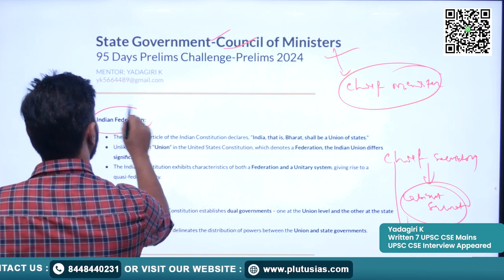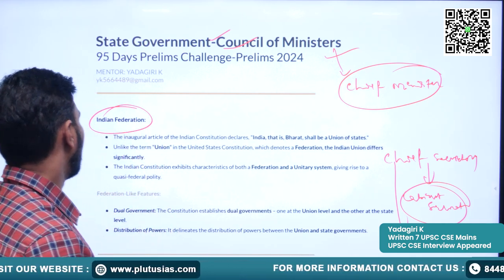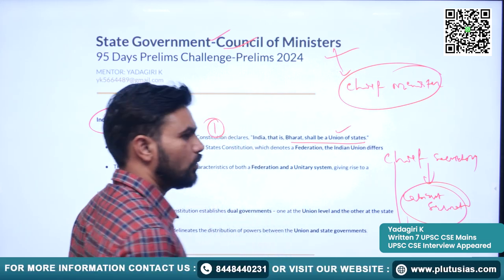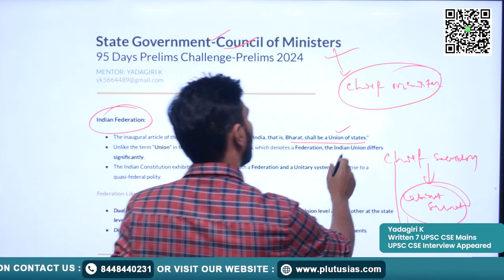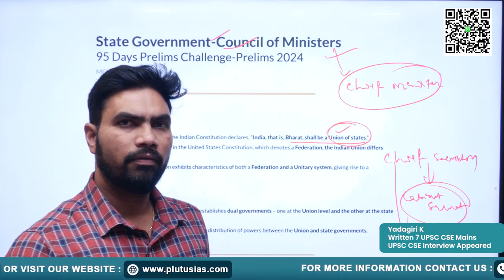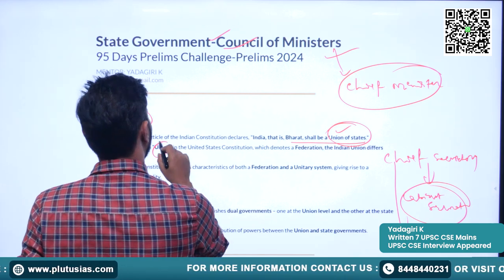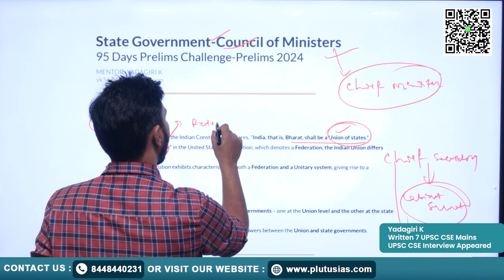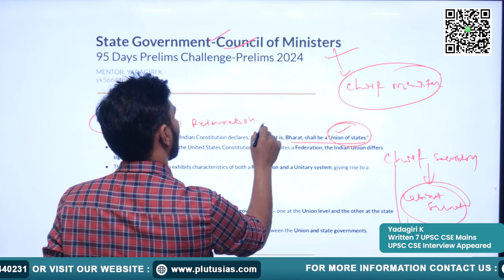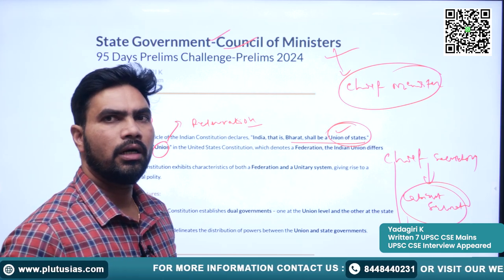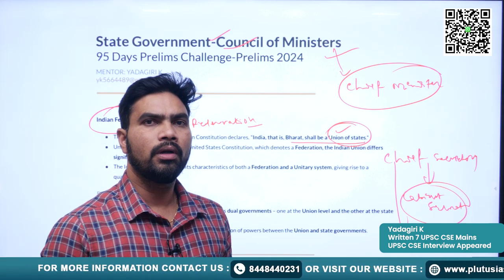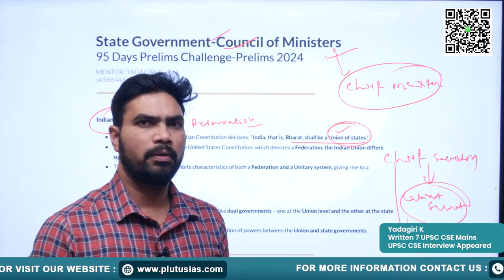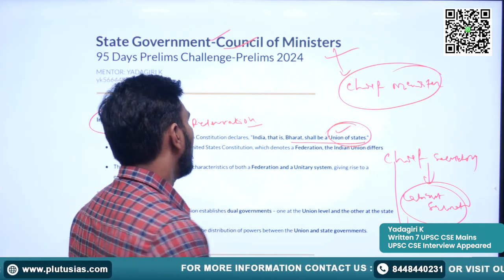The first article of the constitution says that India, that is Bharat, shall be a union of states. The word 'federation' has been deliberately omitted because the union is not formed because of an agreement between the states. In India, the federal type of administration has been established only for administrative convenience.